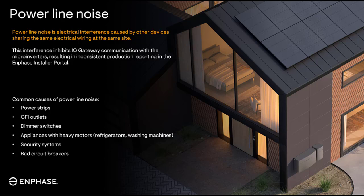Electrical noise is typically caused by electronics that are plugged into the home's electrical system, creating electrical noise within a certain frequency range. This noise can be louder than the communications signal that the in-phase devices use to communicate, which will drown it out and cause communication issues. When the site uses any of the IQ microinverters and IQ gateway, these devices will communicate over the AC power lines in the home and use a frequency of 110 kHz.